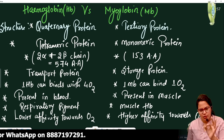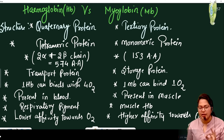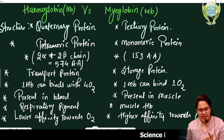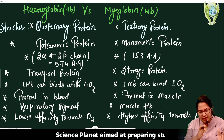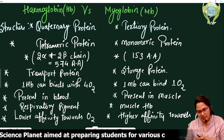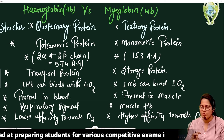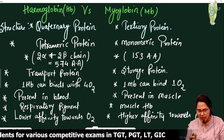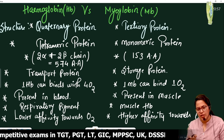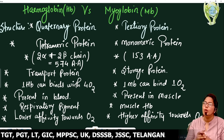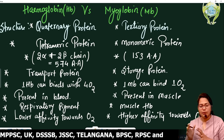Hemoglobin is a quaternary protein. Proteins have primary, secondary, tertiary, and quaternary structures. Hemoglobin is a quaternary protein and myoglobin is a tertiary protein. Quaternary means that there are more than one polypeptide chain.